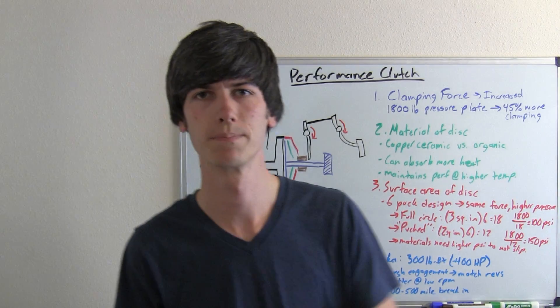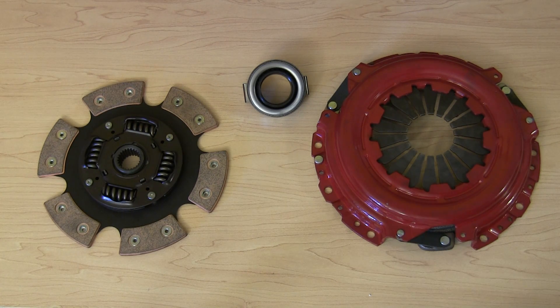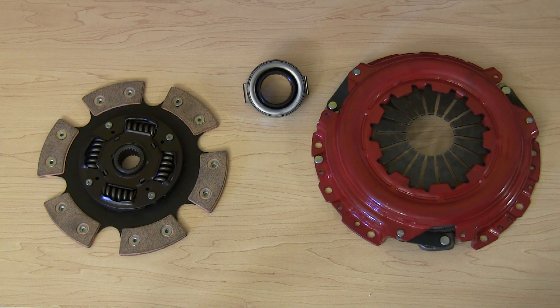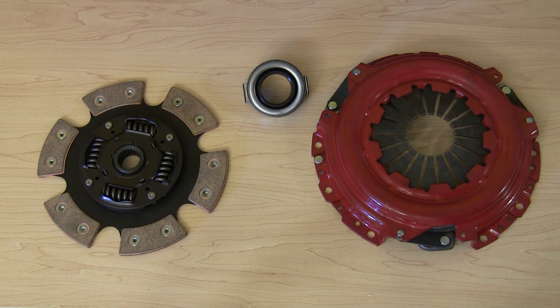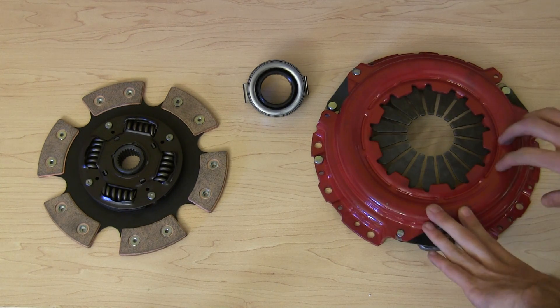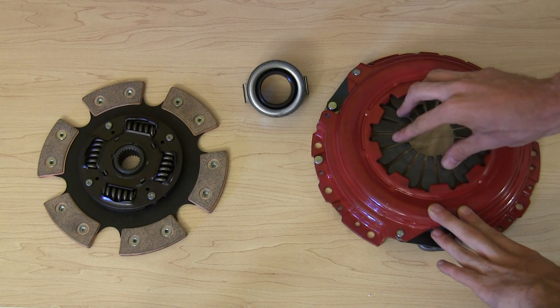So let's take a look at an actual clutch. So here we have a Yonaka performance clutch for the Acura Integra B-Series motors. And I've got a product link in the description if you'd like to check that out. So anyways, what we've got here is this is the pressure plate, the red painted pressure plate. In the center we've got the diaphragm spring.